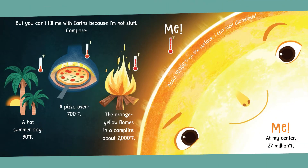But you can't fill me with Earths because I'm hot stuff. Compare: a hot summer day, 90 degrees Fahrenheit; a pizza oven, 700 degrees Fahrenheit; the orange-yellow flames in a campfire, about 2,000 degrees Fahrenheit; me, about 10,000 degrees Fahrenheit on the surface — I can melt diamonds; me at my center, 27 million degrees Fahrenheit.